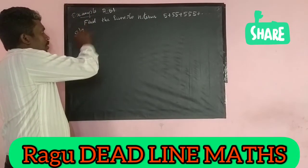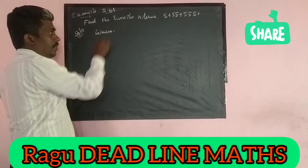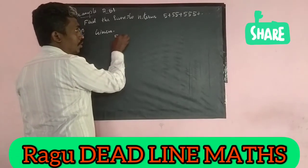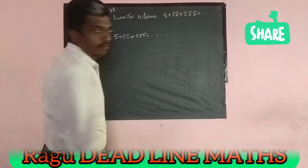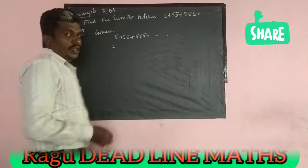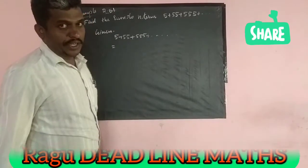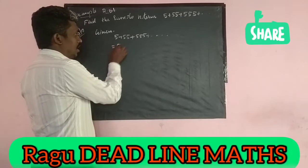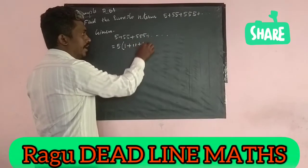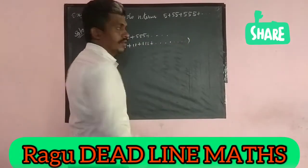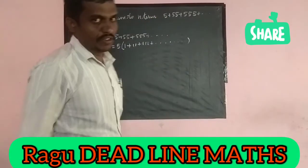So first, this is an easy one. The given sequence is 5 plus 55 plus 555 plus etc. From here, 5 is a common factor. We are taking 5 outside. If you take 5 outside, the balance will be 1 plus 11 plus 111 plus etc.